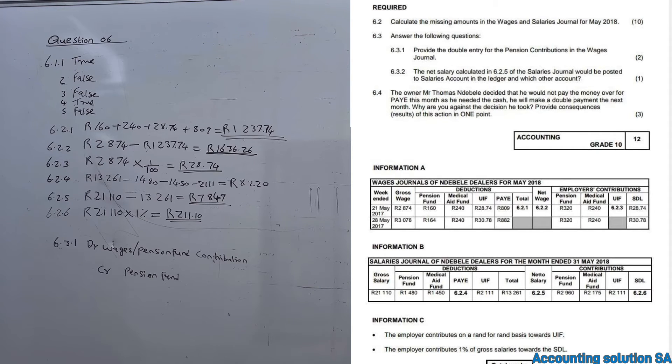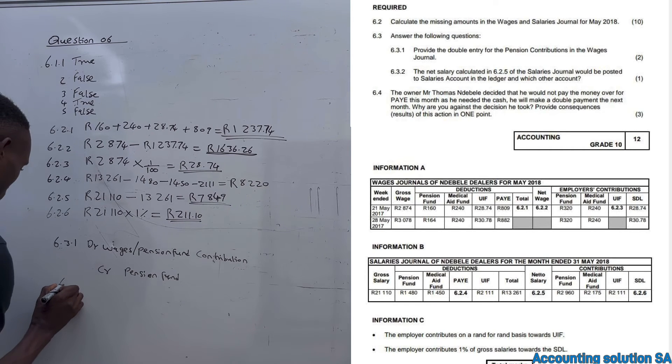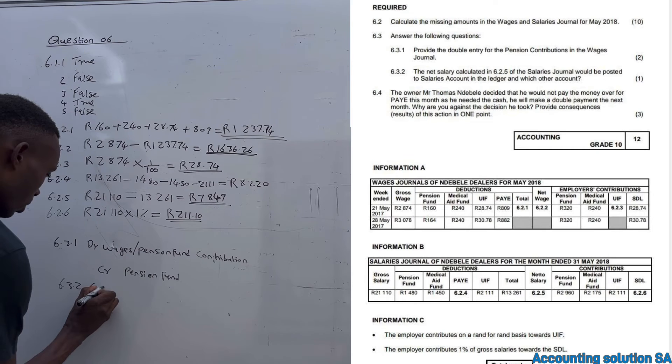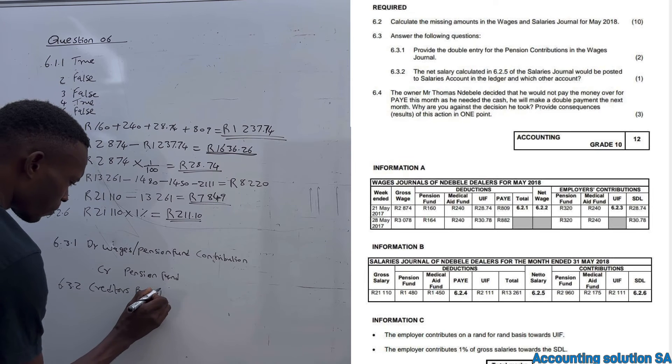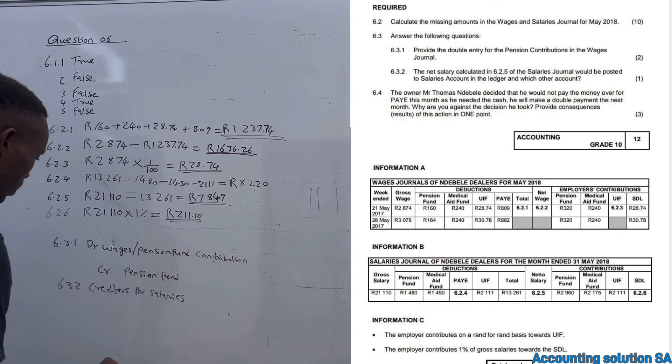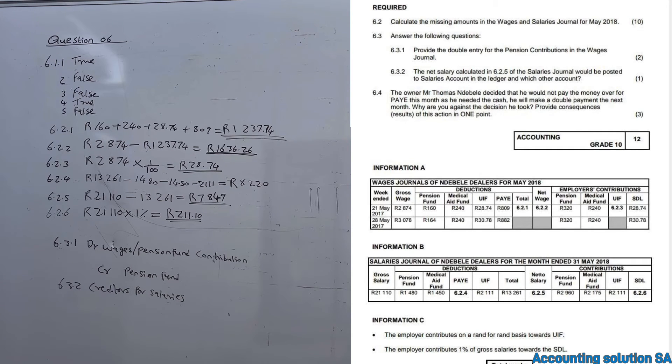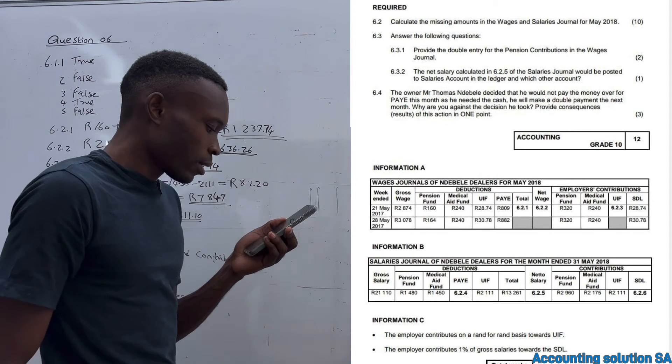6.3.2 - The net salary calculated... Remember under true/false we said that net salary is the same as creditors for salary. The net salary calculated under 6.2.5 of the salary journal will be posted to salaries account in the ledger and which other account? It's also gonna be recorded under creditors for salaries.